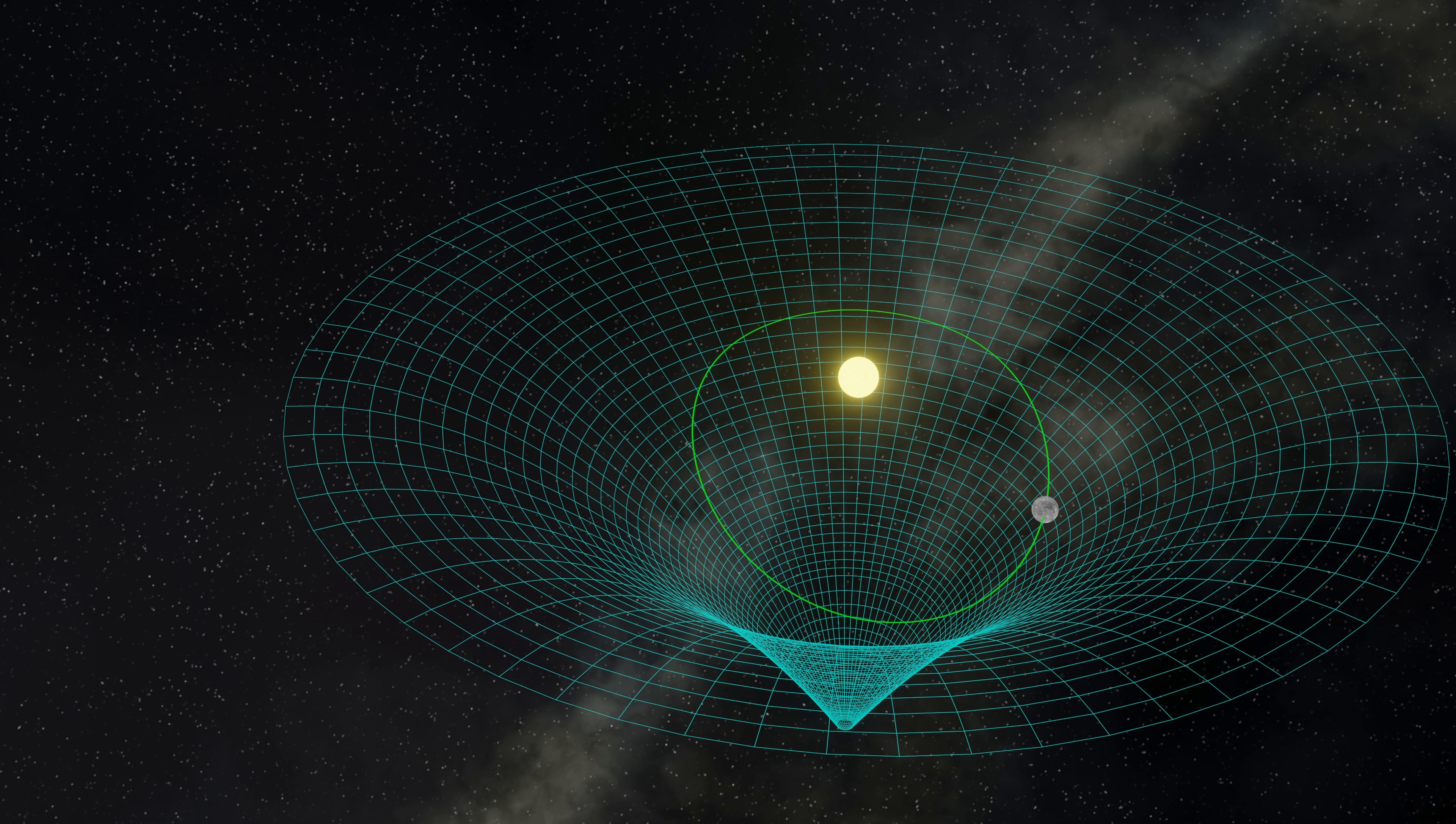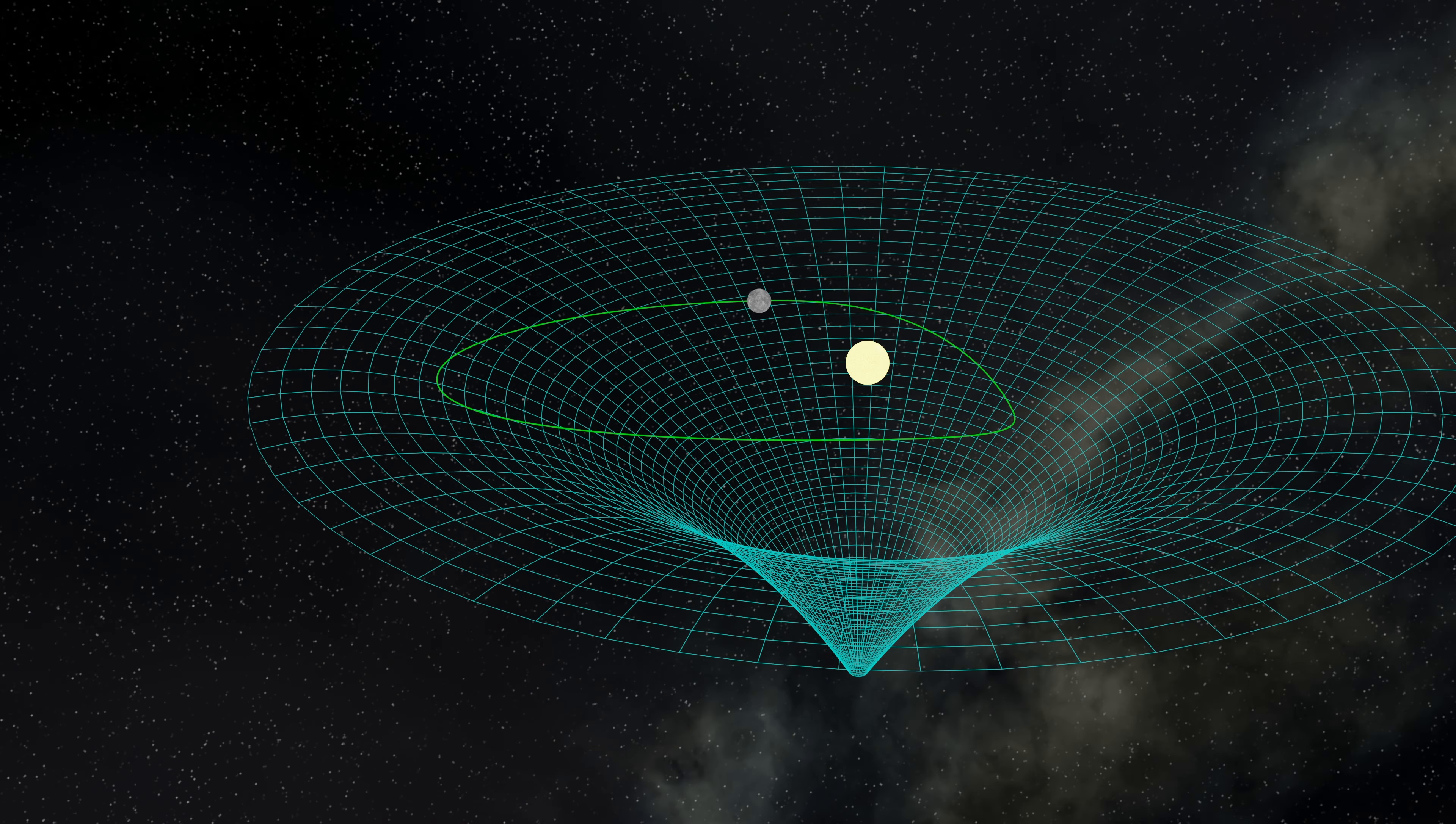The extra precession that happens in Mercury and Venus and Earth to a smaller extent, those extra 43 seconds of arc are caused by the curvature of space-time, and that's because of the huge gravitational presence of the Sun. This is because as Mercury orbits and moves towards its perihelion, it moves further and further into the Sun's gravity well, where space-time is more and more curved. And this makes the position of the perihelion move with each orbit.